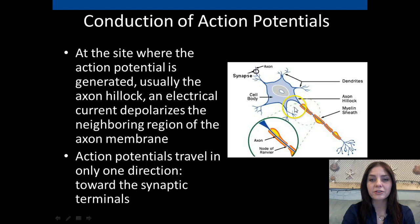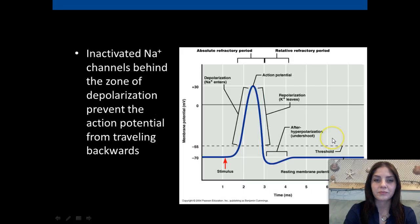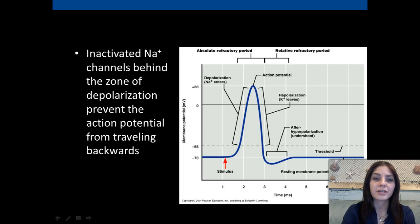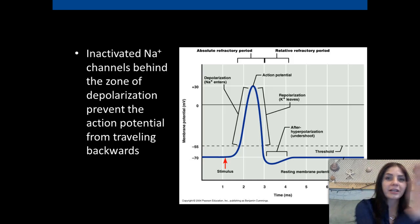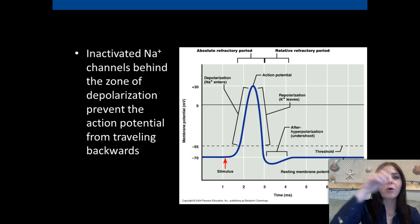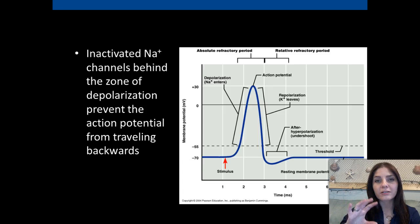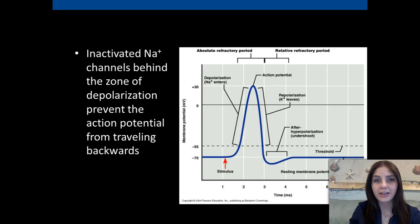That signal is going to come from the axon hillock, and it's going to skip from one node of Ranvier to the next. Inactive sodium channels behind the zone of depolarization prevent the action potential from traveling backwards. We're always going to send it from one axon to the synapse to the dendrites of the next axon until we get a response.